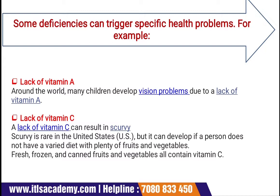Some deficiencies can trigger specific health problems. For example, lack of vitamin A — around the world, many children develop vision problems due to lack of vitamin A. They cannot easily see the environment. Lack of vitamin C can result in scurvy. Scurvy is rare in the US, but it can develop if a person does not have a varied diet with plenty of fruits and vegetables.